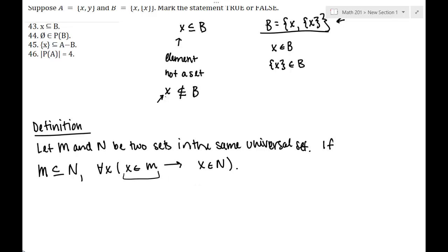Since X is not a set, it doesn't have any elements — it is an element itself, but not a set, so we can't check its elements. The take-home is: X alone is not a set, it's just an element. So the first statement is false.